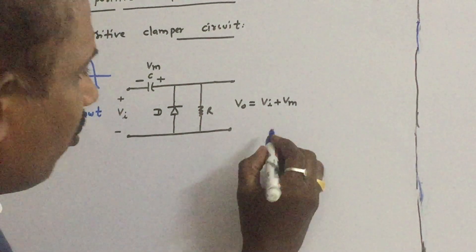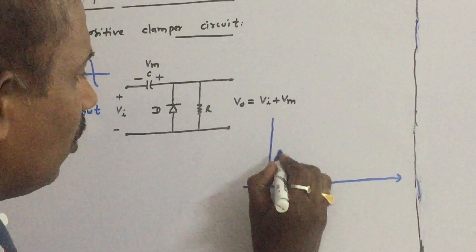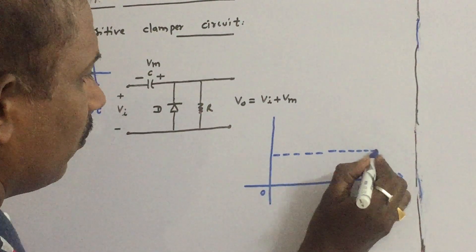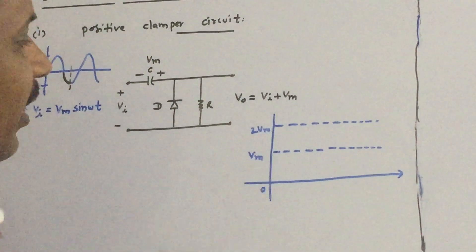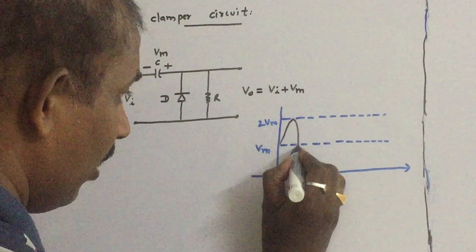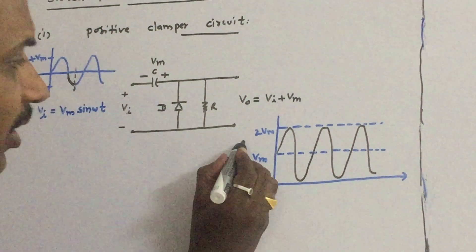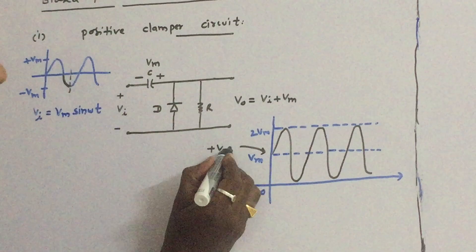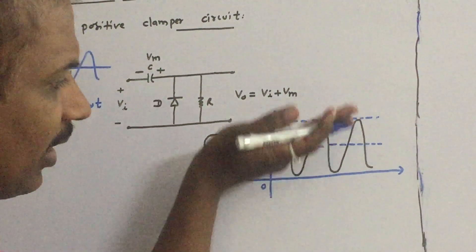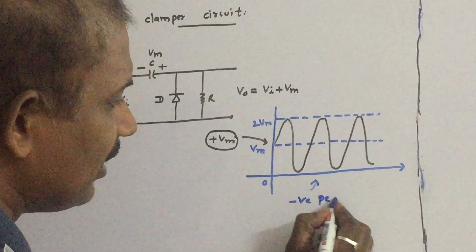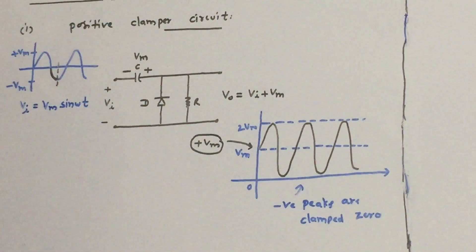The output waveform is very simple. First draw the DC level, which is Vm. Take the 2Vm line and draw the output. The DC level is plus Vm. Since it introduces a positive DC level, that's why it is called a positive clamper circuit. The negative peaks are clamped to 0.